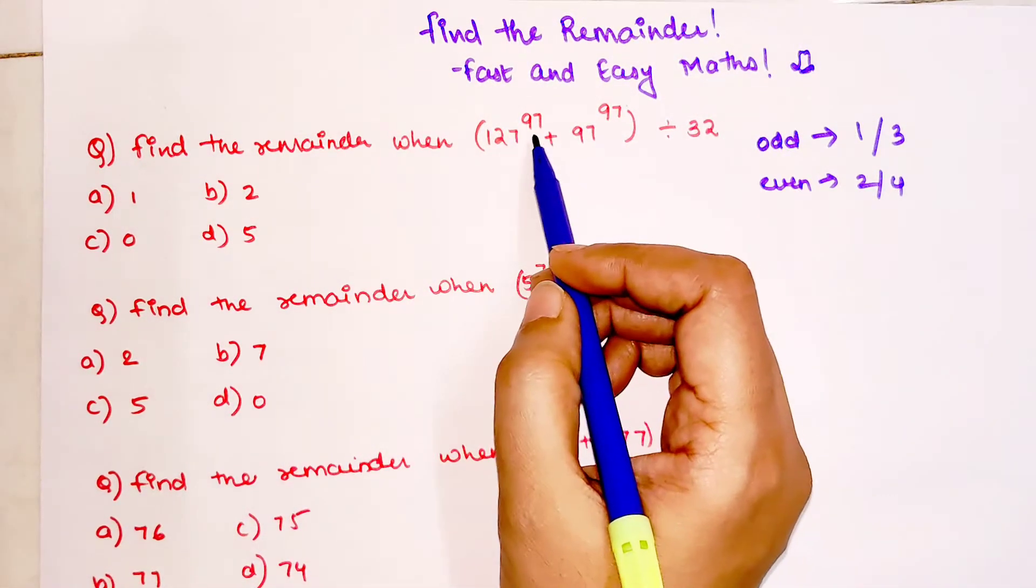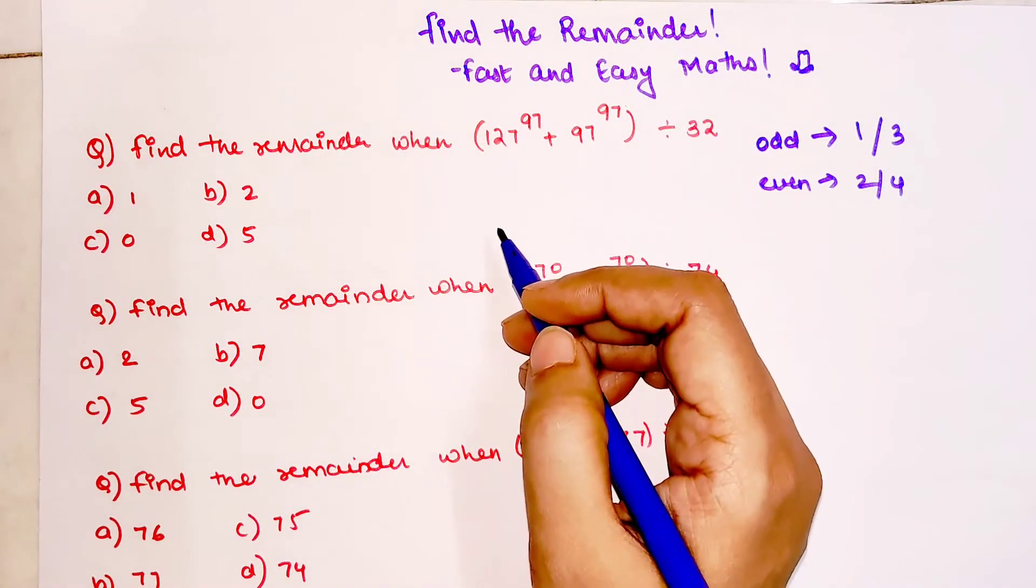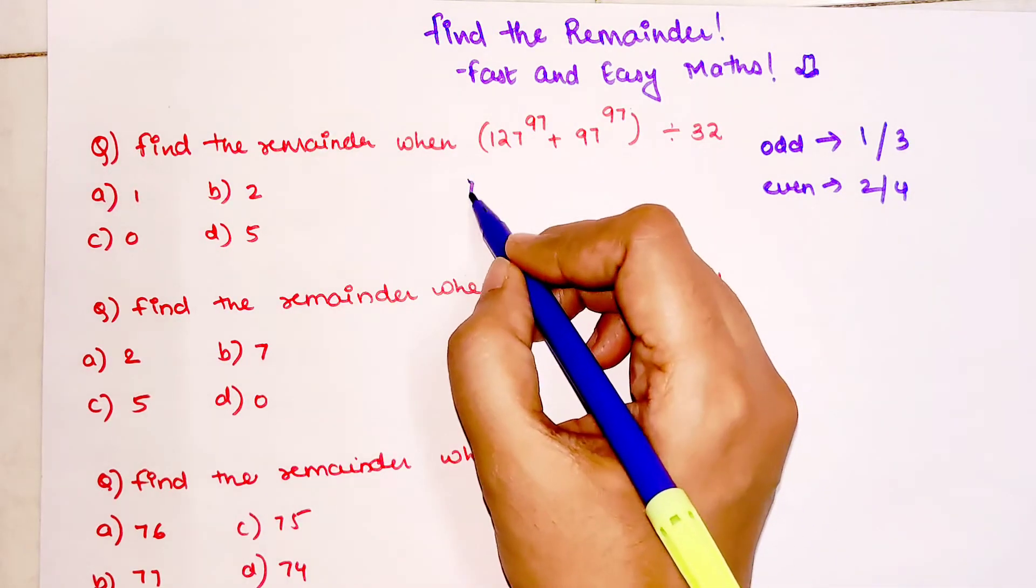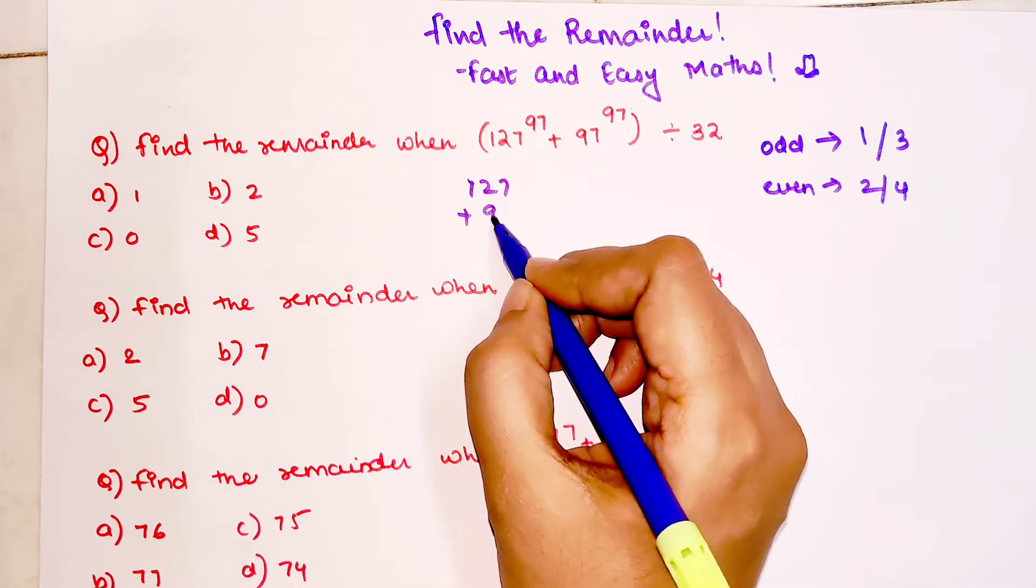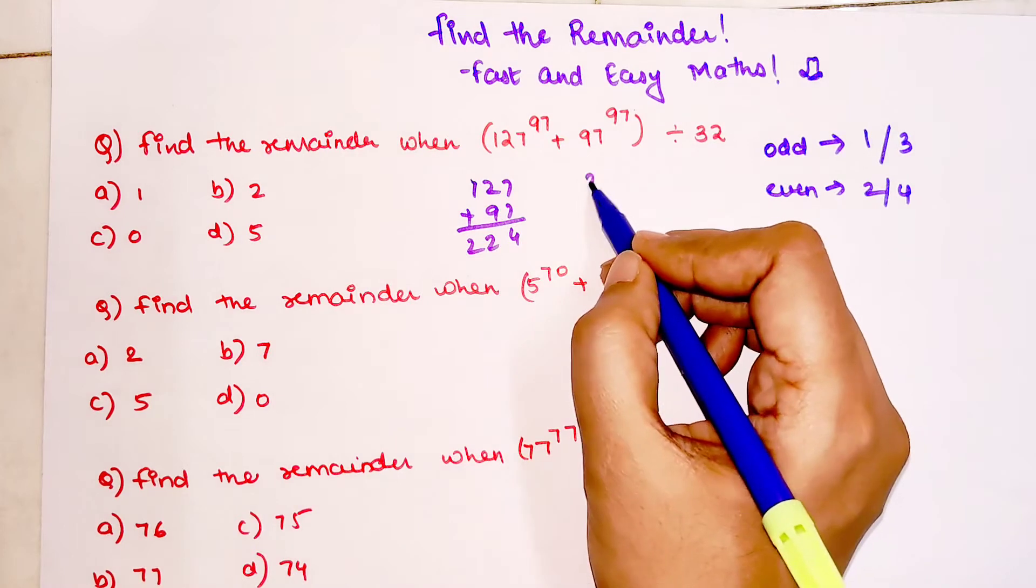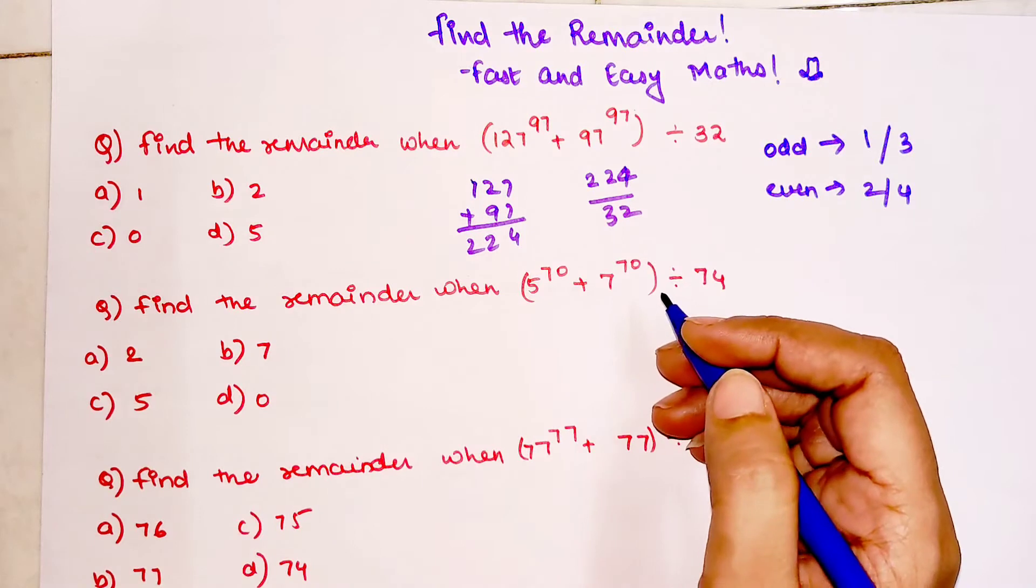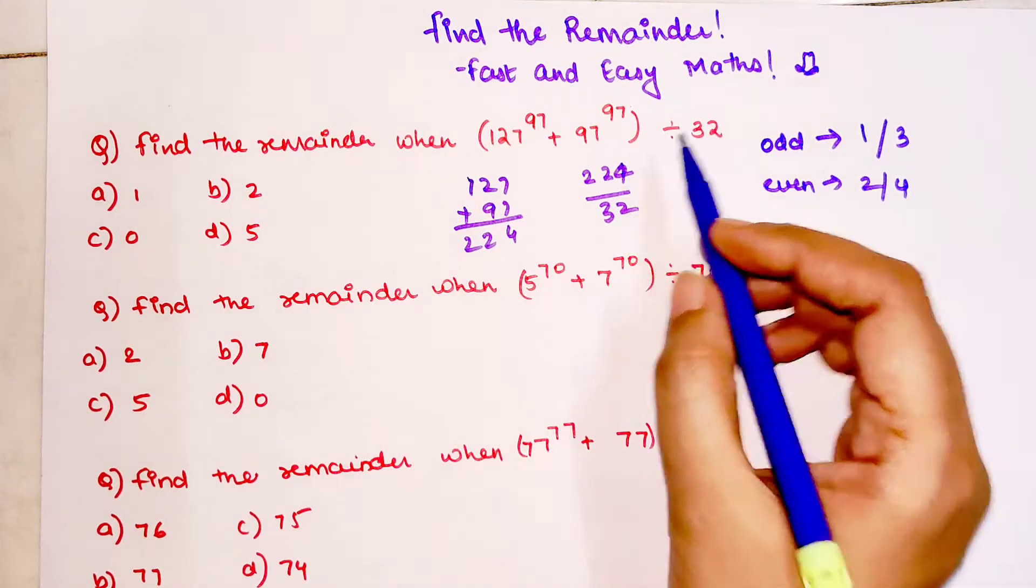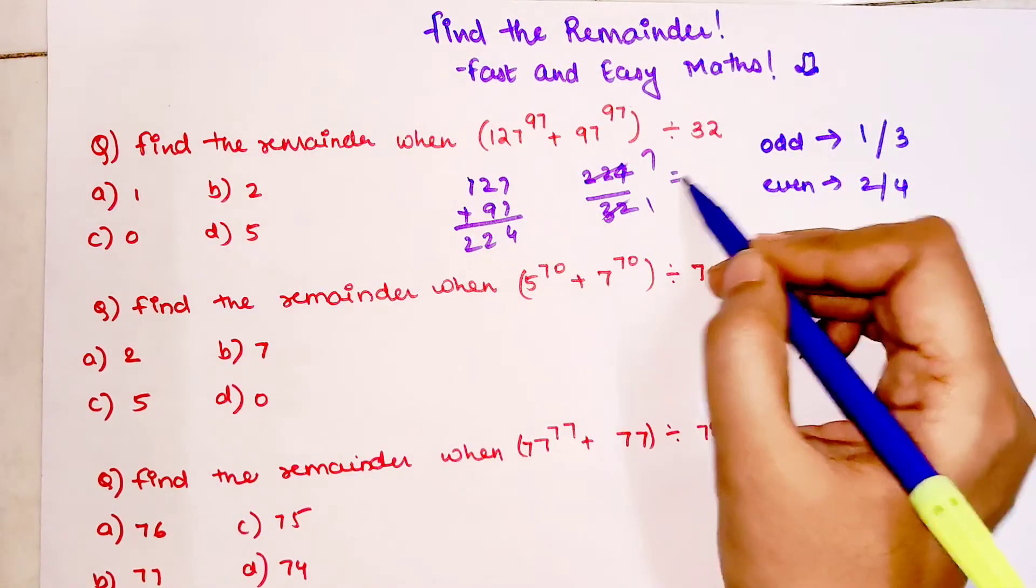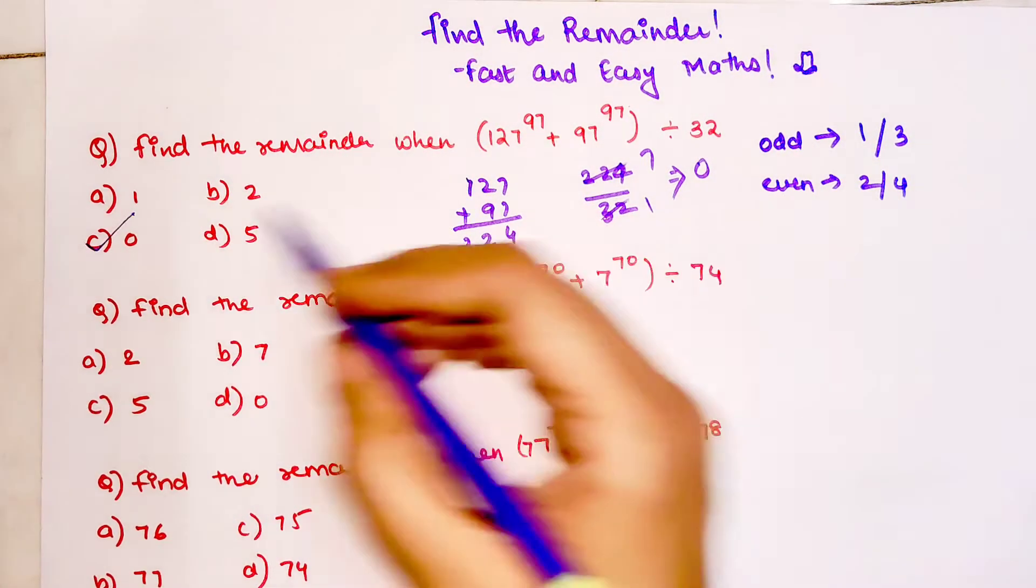Simply see here, in this particular case we have 127 raised to 97 plus 97 raised to 97 divided by 32. Now, 97 and 97 are odd, so we will add them: 127 plus 97. We get 224. So we are going to divide 224 by 32. If you look closely, 32 times 7 gets you 224, so the remainder in this case is 0. Option C is your correct option.